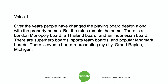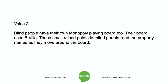There is a London Monopoly board, a Thailand board, and an Indonesian board. There are superhero boards, sports team boards, and popular landmark boards. There is even a board representing Grand Rapids, Michigan. Blind people have their own Monopoly playing board too. Their board uses Braille — small raised points that let blind people read the property names as they move around the board.